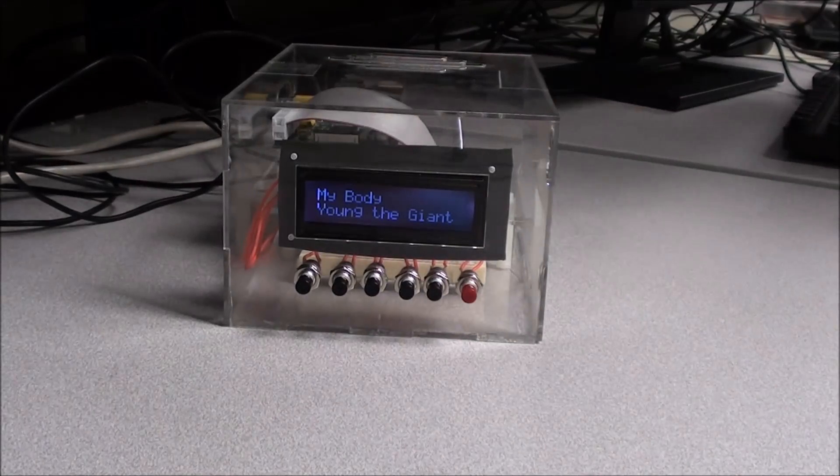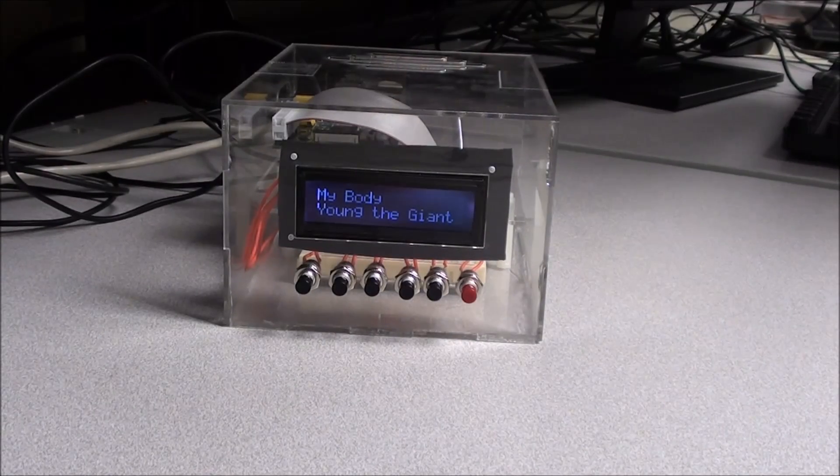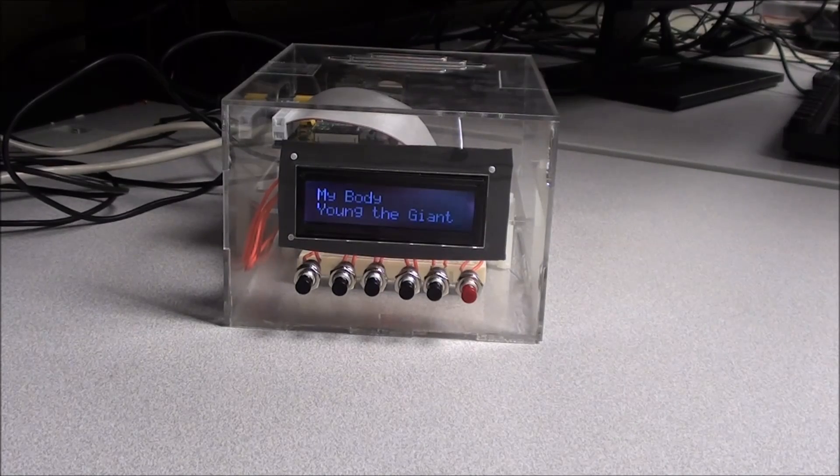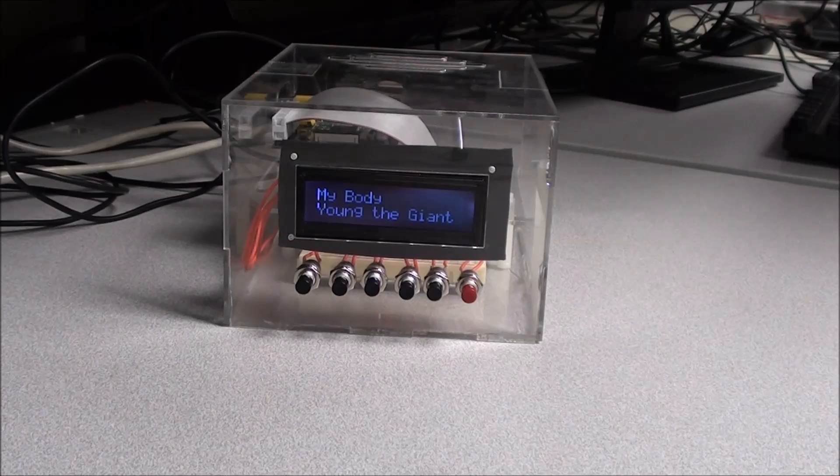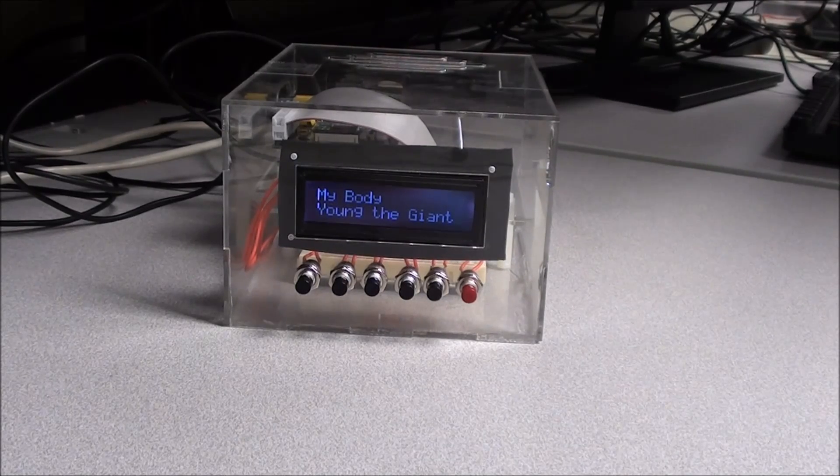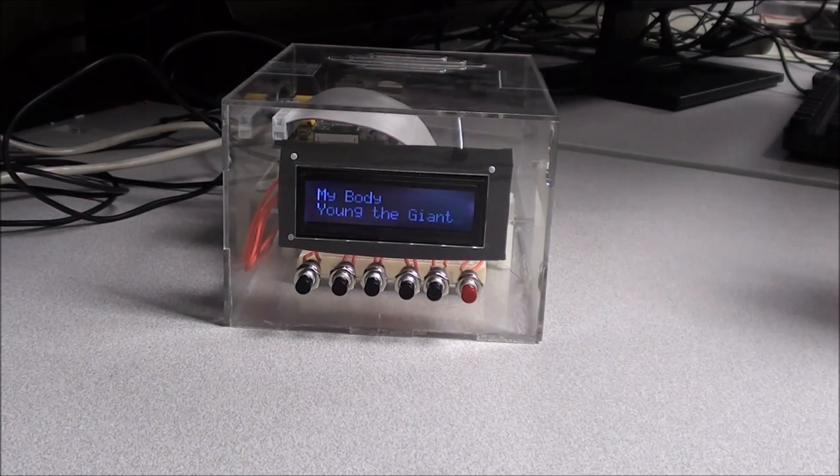As you can see, the top row shows the name of the song and the bottom row shows the artist. This is updated constantly through a bash script and a Python script that controls the buttons, waits for button presses, and then controls the LCD based on what song is being played by Pandora.